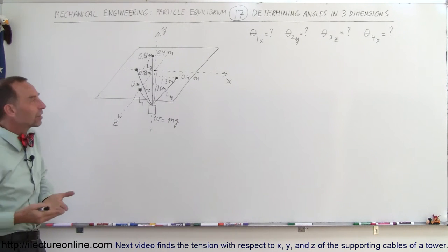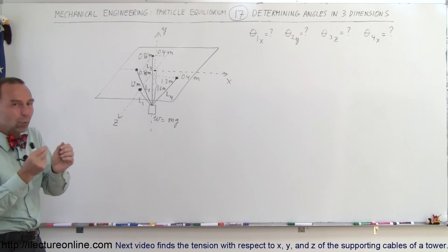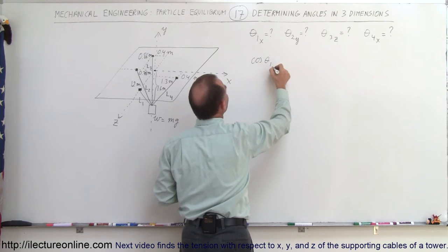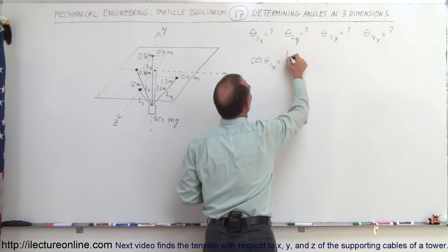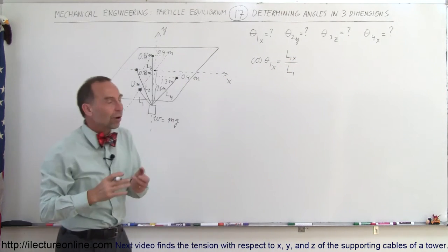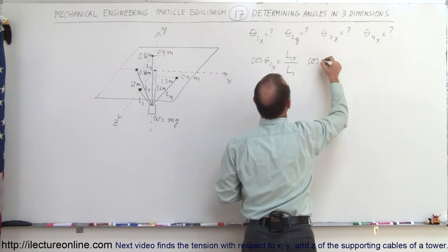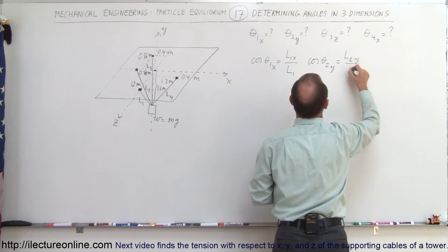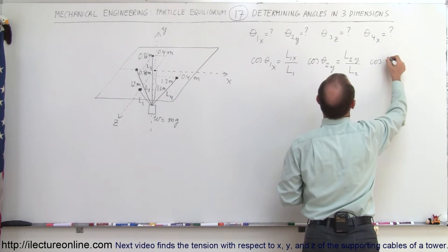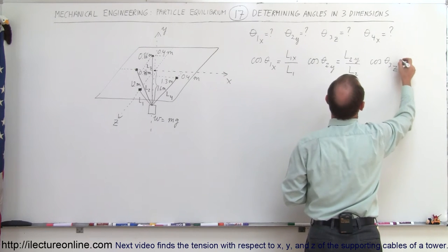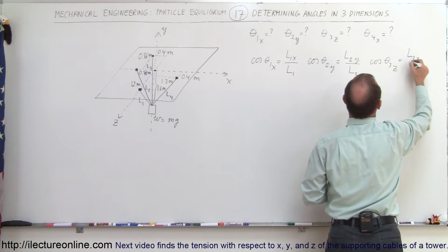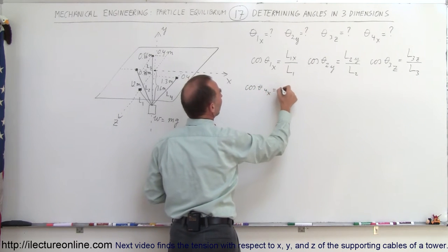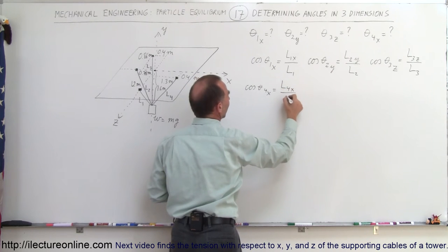The way we find these angles is using the direction cosines. The cosine of theta sub 1 in the x-direction equals the x-component of line 1 divided by the magnitude of line 1. Similarly, the direction cosine of theta sub 2 relative to the y-direction equals the y-component of line 2 divided by the magnitude of line 2. For theta sub 3z, it's the z-component of line 3 divided by the magnitude of line 3. And for line 4 relative to the x-direction, it's the x-component of line 4 divided by the magnitude of line 4.